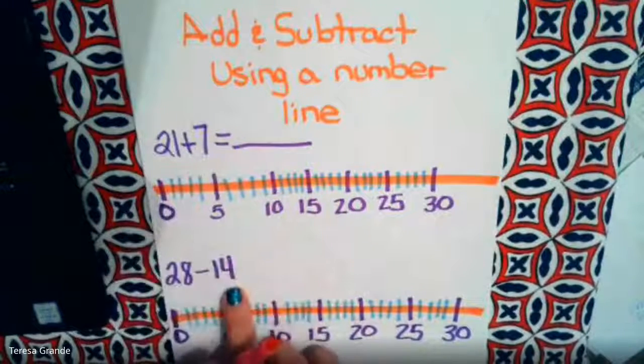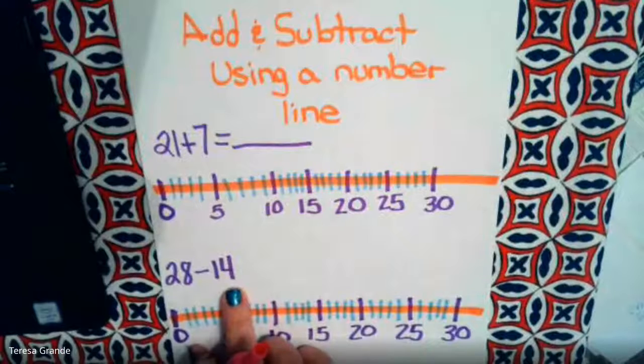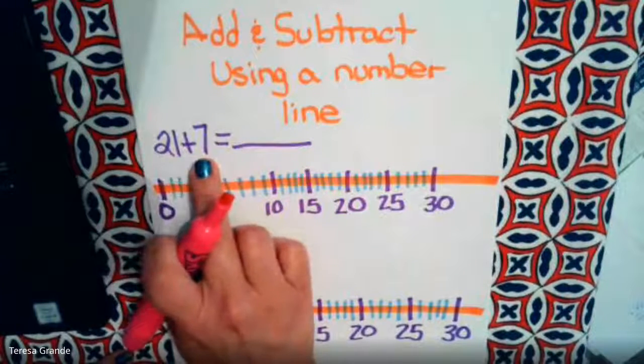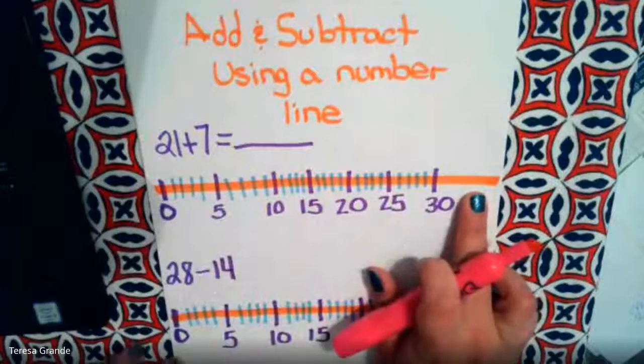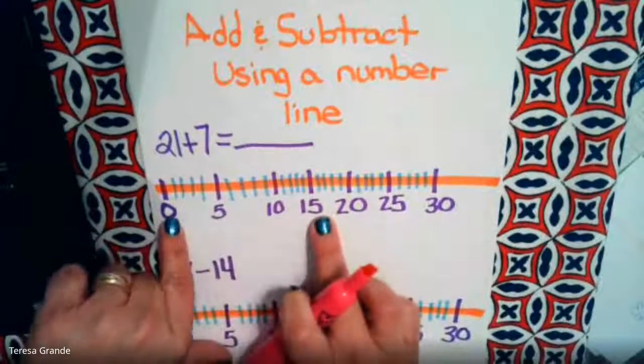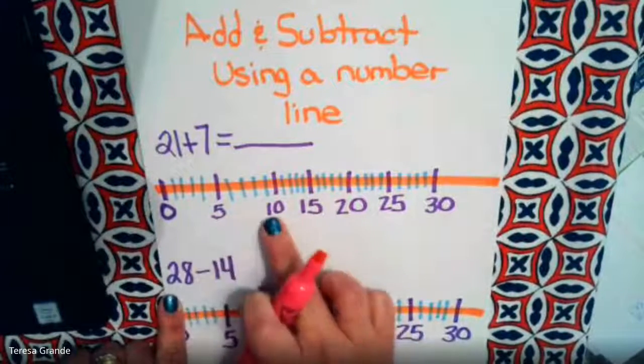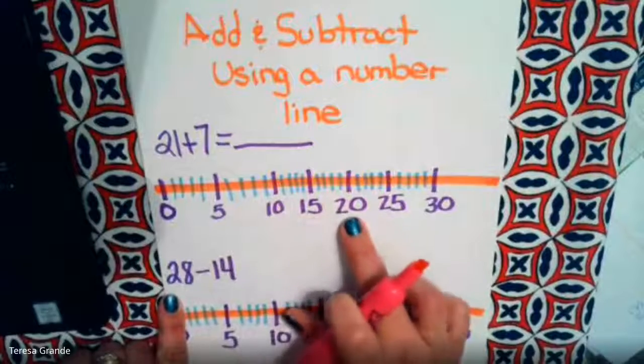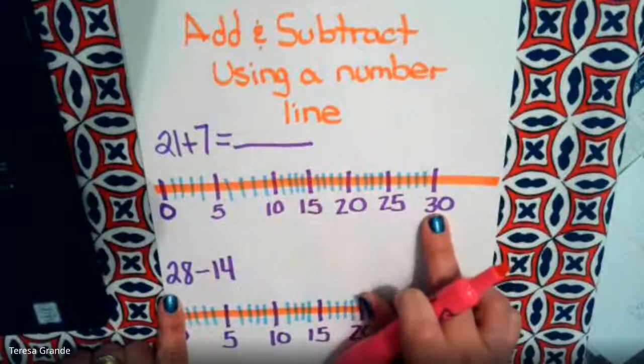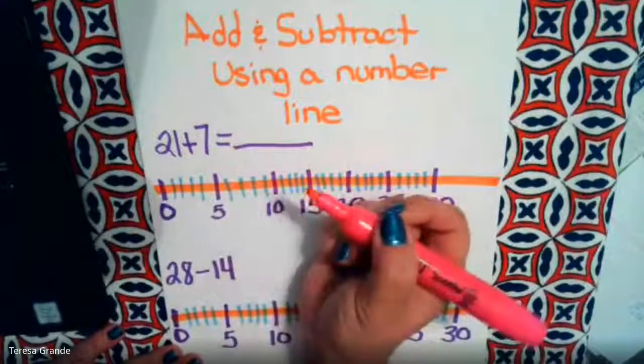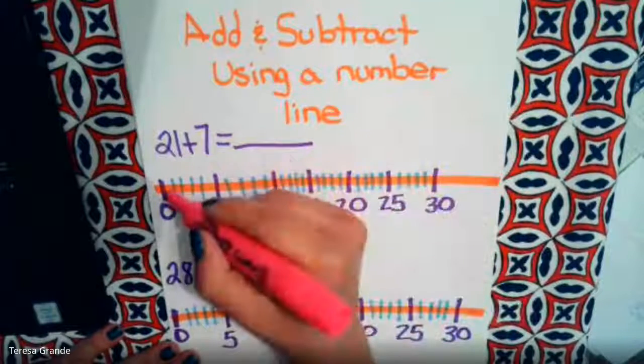The first problem we're going to look at is 21 plus 7. If you look at this number line, you see the big numbers in purple and what we did here is we counted by fives: 5, 10, 15, 20, 25, 30. Every little blue line in between is one.